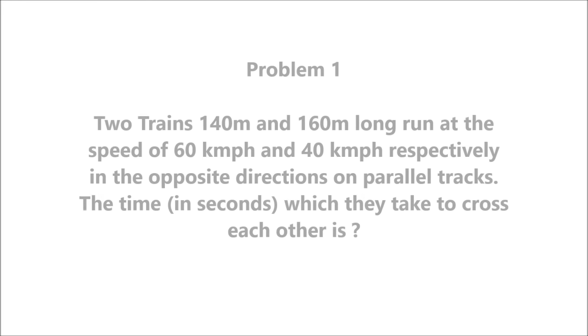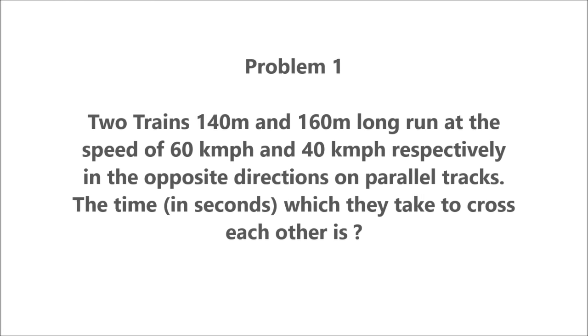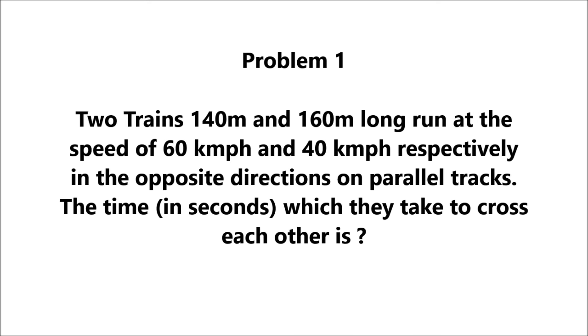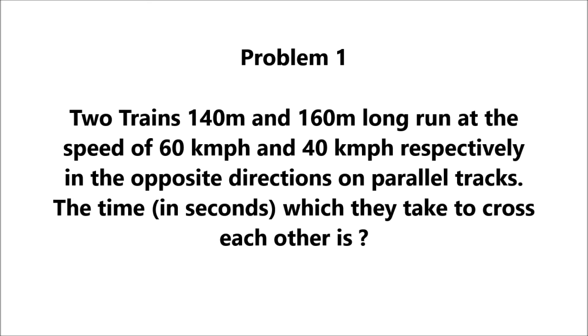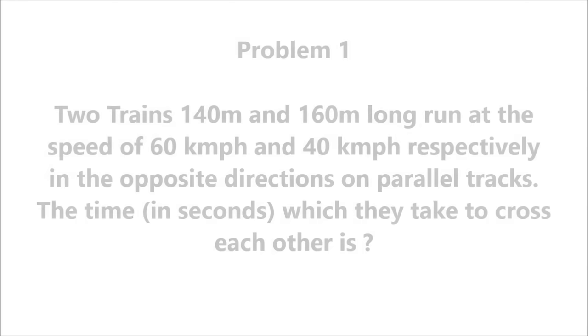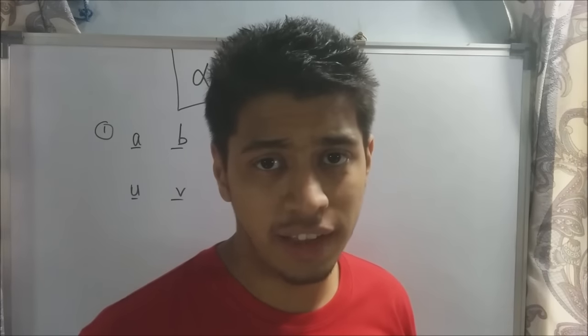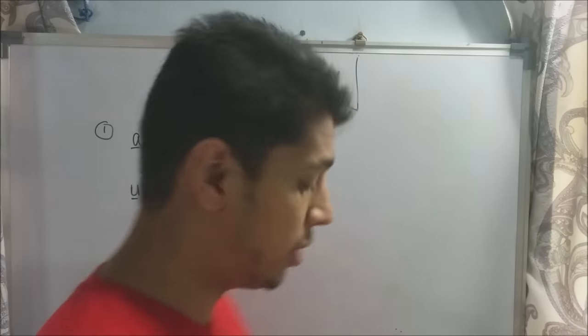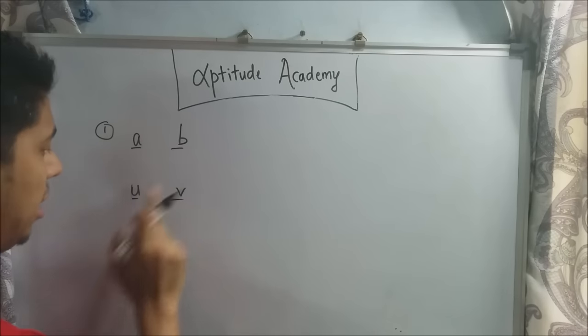Problem 1. Two trains 140m and 160m long run at a speed of 60 kmph and 40 kmph respectively in the opposite directions on parallel tracks. The time in seconds which they take to cross each other is? Alright, before you start solving the sum, you need to make a note of this. Whenever you have a problem of two trains, you write a, b, u and v.